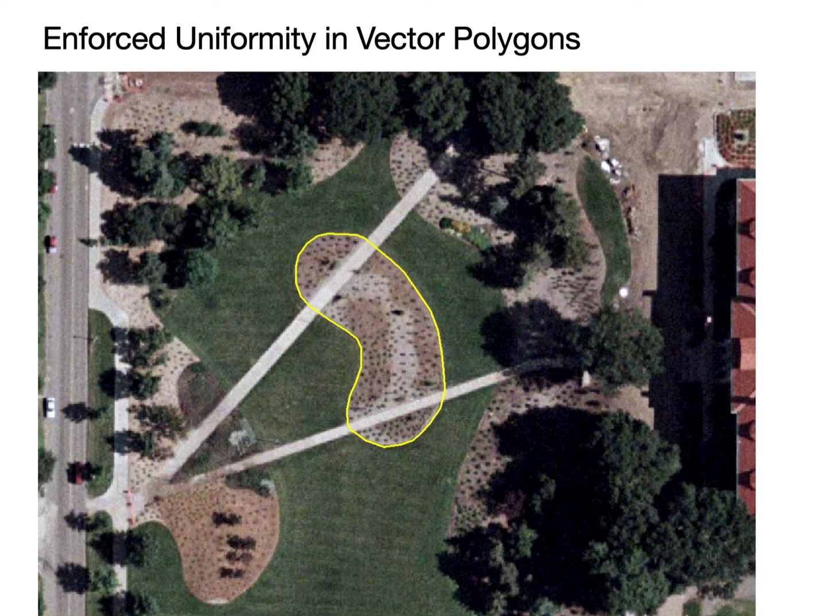For example, if I'm digitizing here a polygon for a flower bed, I might say that the cover type in the attribute for that flower bed is mulch. But clearly there is something amiss here where these two paths run through. These are concrete paths. And so I have this inclusion that's non-mulch, even though the attribute may say mulch.